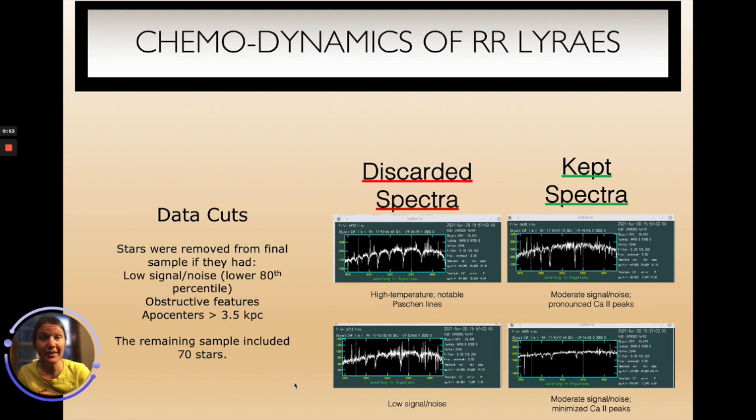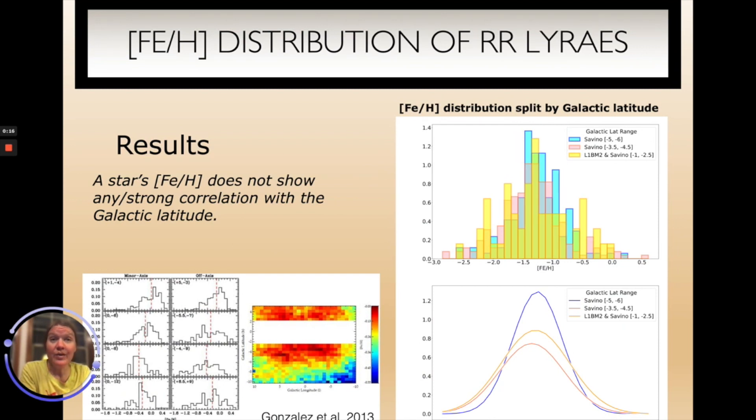We had to discard a number of stars because the observations were taken when they were at a phase where the temperature was too hot to reliably determine calcium triplet lines and/or we also had to discard stars that didn't have the signal-to-noise required to get good calcium triplet abundances. Our remaining sample included 70 RR Lyrae stars with signal-to-noise ratios 30 or greater. Importantly we also only retained stars that had apocenter distances of less than 3.5 kiloparsecs so that we could ensure a bonafide sample of bulge RR Lyrae stars. We then measured the equivalent width of the RR Lyrae stars presented in Savino et al. 2020 so that we could have any consistent metallicities for a larger sample of bulge RR Lyrae stars.